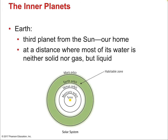Earth — the opposite of Mercury and Venus — is a paradise for life. As the third planet from the sun, it's at a distance where most of its water is neither solid nor gas, but liquid. Mars is arguably where liquid water could be sustained, but water is more likely to be frozen there. This so-called habitable zone is also known as the Goldilocks zone — the just-right distance from our particularly sized star.